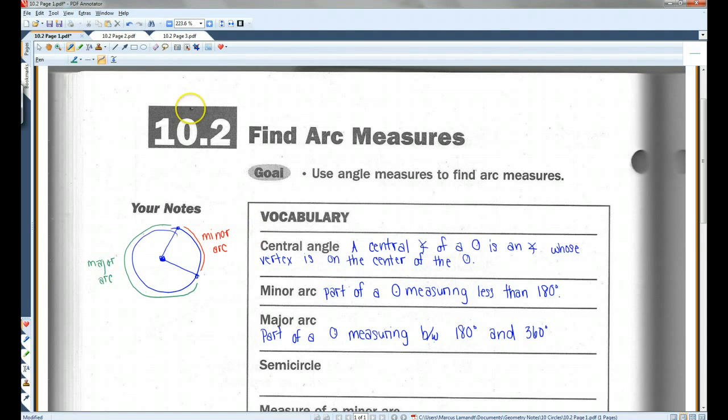So for example, let's say, let me switch back to blue. Let's imagine that this was 90 degrees, this arc here. The whole circle is 360 degrees. So this major arc would have to be 270, because all together it needs to add up to 360. This would be your minor arc, and this would be your major arc.